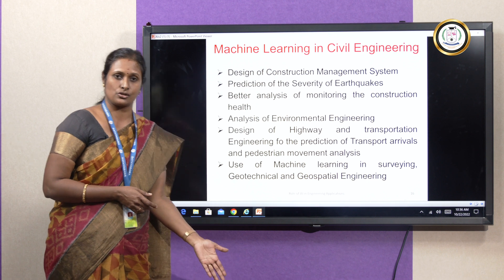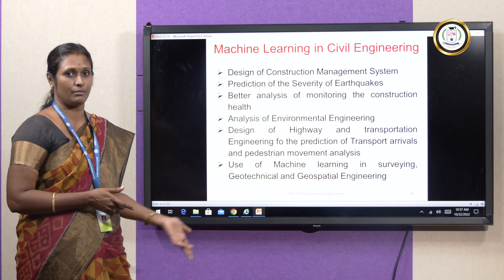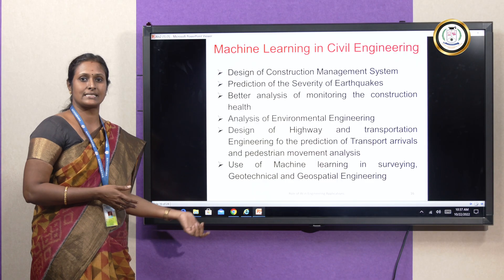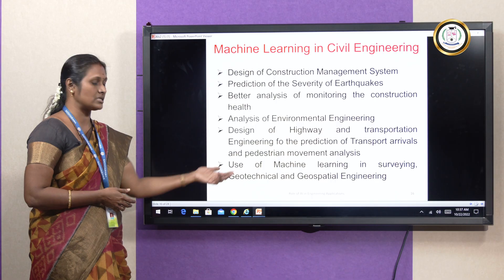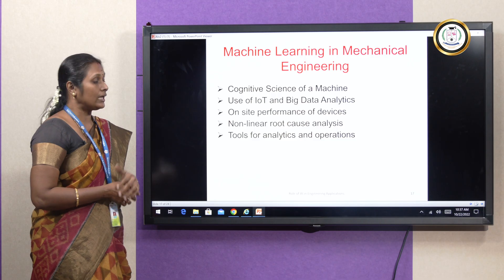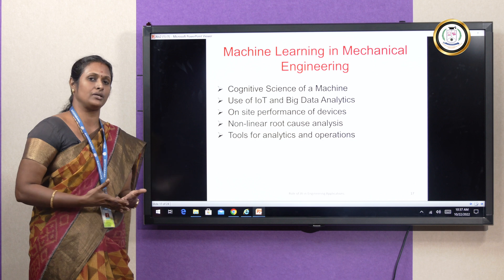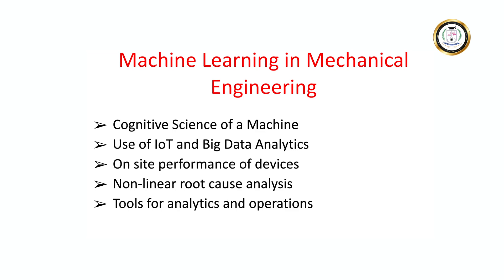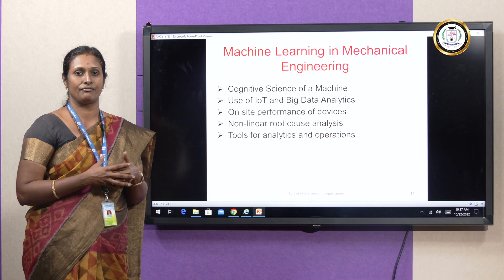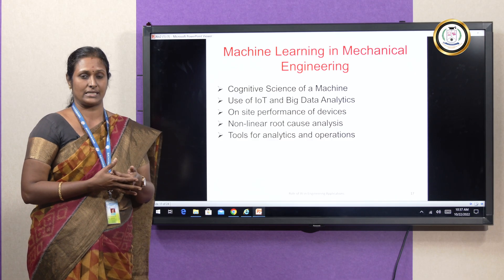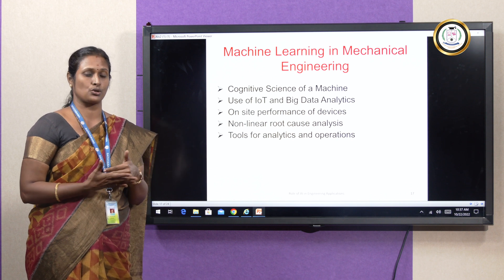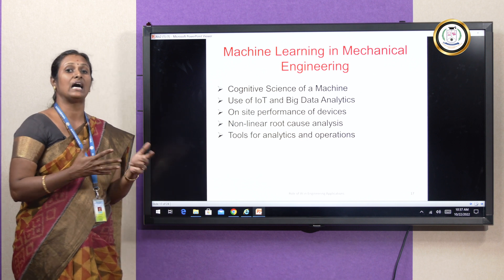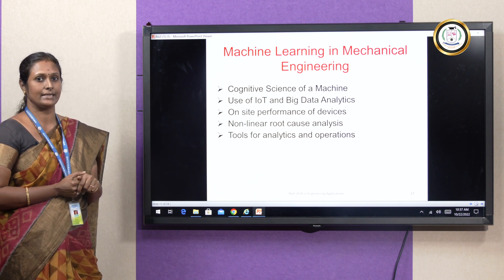In civil engineering applications also, AI and ML play a major role — for environmental sustainability, green building, disaster management, and various other applications, these algorithms are used. Algorithms in this sense cover machine learning and deep learning. In mechanical engineering, using IoT and big data methodologies we can identify whether there is any wear and tear in manufacturing sectors, whether a threshold is reached, and according to that it will give an alert notification. Predictive maintenance can be done to avoid hazardous situations in manufacturing industries.